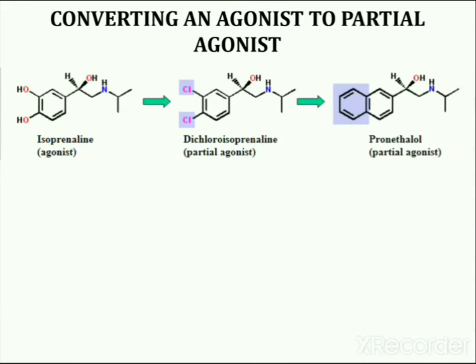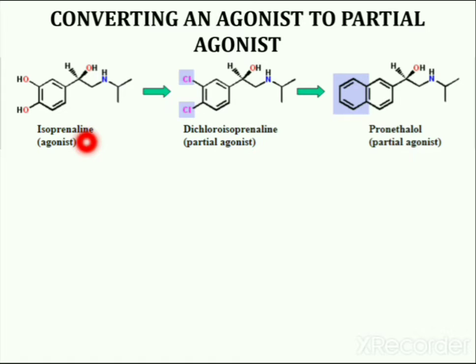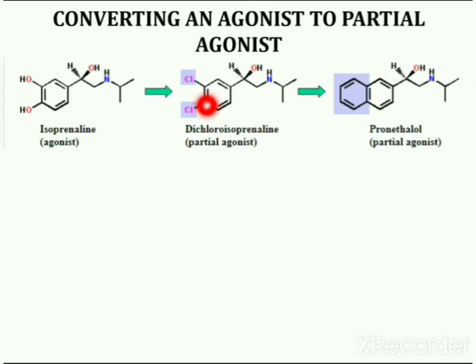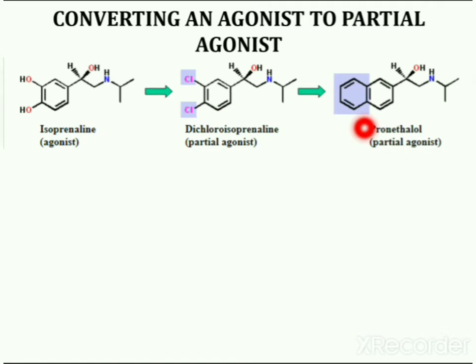Now we will see how an agonist is converted into a partial agonist. Isoproterenol is first converted to dichloroisoproterenol by the introduction of chloro groups. Further removal of both chloro groups generates pronethalol. Isoproterenol is a beta agonist, while dichloroisoproterenol and pronethalol are partial agonists. Partial agonists bind to the receptor and produce an induced fit, resulting in weak activation of the receptor, and also block the natural messenger from binding to the receptor site.